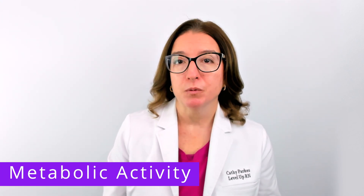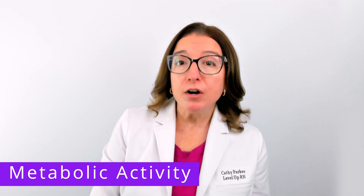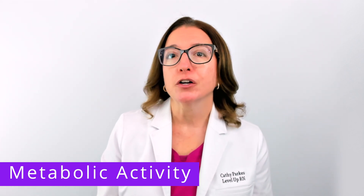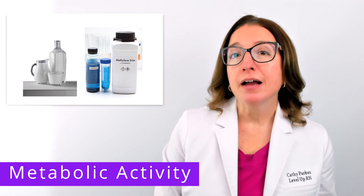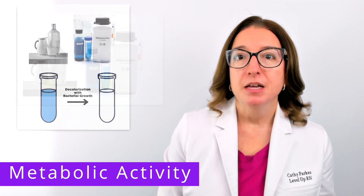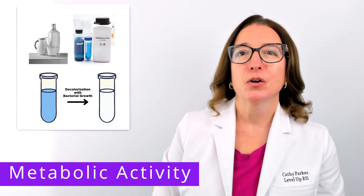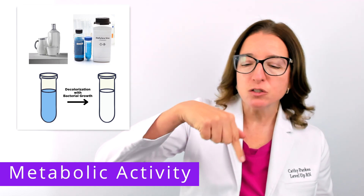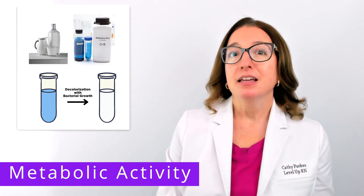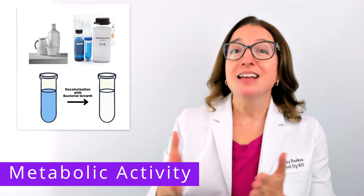Lastly, we can also indirectly measure bacterial growth by monitoring the metabolic activity of the microorganisms in the sample. We do this by monitoring substances produced during bacterial growth or the disappearance of substances used by bacteria during growth. An example of this is the methylene blue dye reduction test, which is used to determine the amount of bacterial contamination in milk. This dye is blue in the presence of oxygen but becomes decolorized when there is less oxygen. During this test, the blue dye is mixed with milk in a test tube, sealed, and incubated. If there is bacterial growth, which requires oxygen, then oxygen is used up, which will make the dye become decolorized.